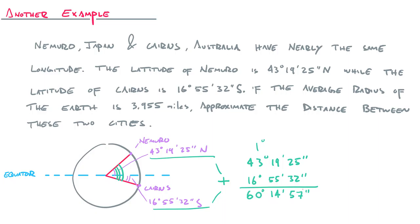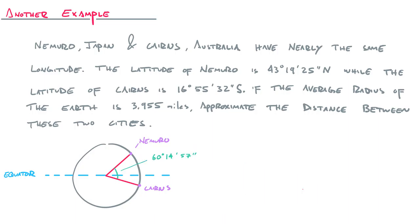Now remember, though, this is in DMS. We need to get our central angle in something that's in terms of radians. So to convert DMS into radians, we have to do two things. We first have to turn it into decimal notation. So that's what this is. I just divided 57 by 60 to get a decimal, added that to 14, and then divided that whole thing by 60. And so I got the decimal. That's approximately 0.249.